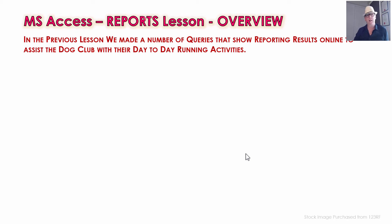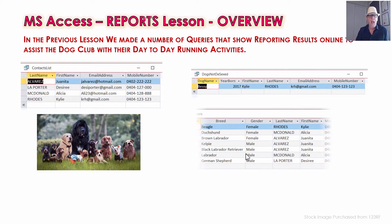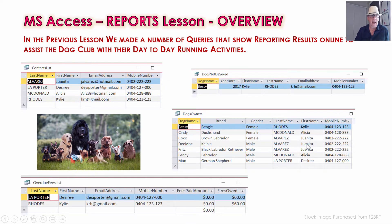In the previous lesson, we made the queries. You've got to have your queries made before you make reports. We made a contacts list, the dogs that weren't de-sexed yet that needed to be checked up on, the dog owners for all the dogs plus the dogs, and information about who owned them and a contact telephone number.